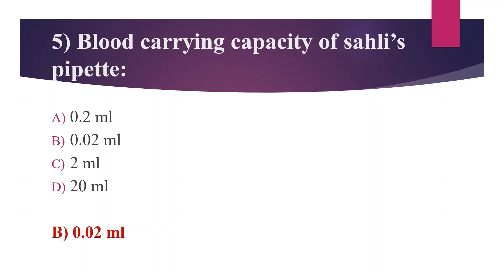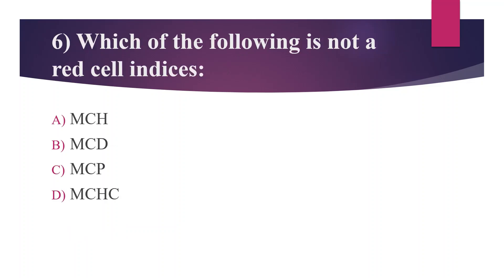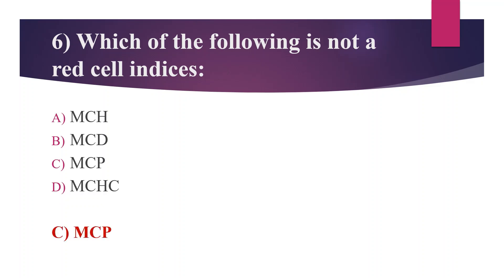Sixth question: which of the following is not a red cell index? Option A: MCH. Option B: MCD. Option C: MCP. Option D: MCHC. The answer is Option C, MCP.